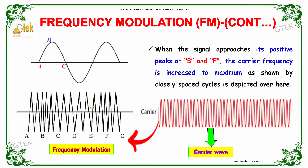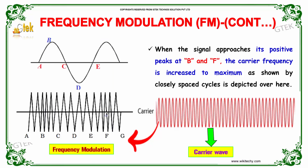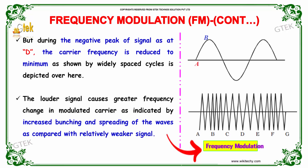When the signal approaches positive peak at B and F, the carrier frequency is increased to maximum, as shown by the closely spaced cycles. But during the negative peak of the signal, the carrier frequency is reduced to minimum, as shown by the widely spaced cycles. The louder signal causes greater frequency deviation in the modulated carrier, as indicated by increased bunching and spreading of the waves compared with relatively weaker signals.